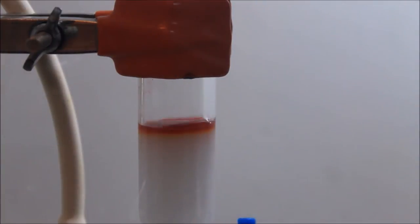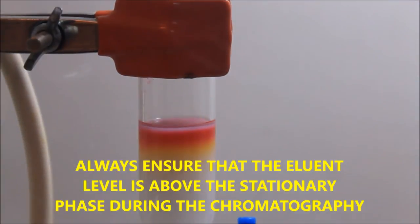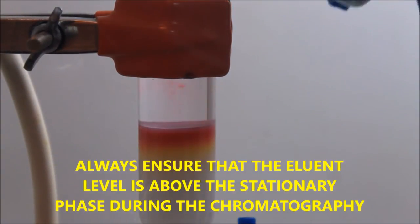Once the sample has entered the column, fresh solvent is added with care, trying not to disturb the surface of the silica gel. Alternatively, a layer of sand can be added to avoid this disturbance.